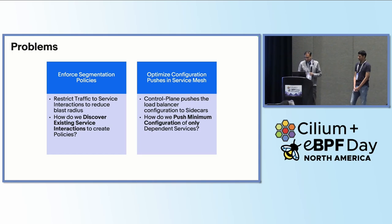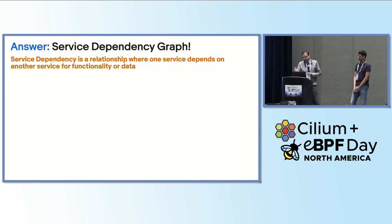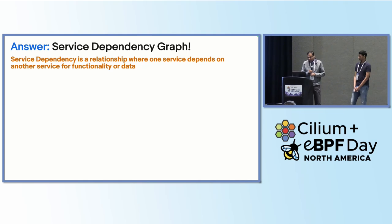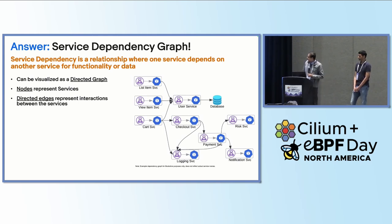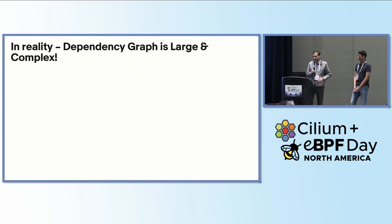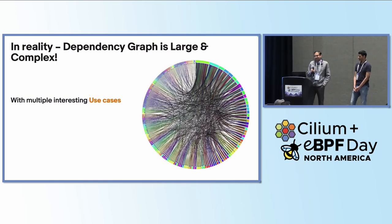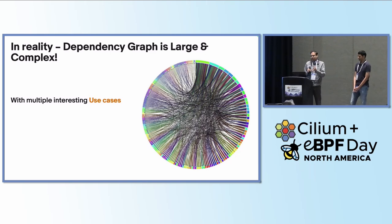These were the two problems we were looking at, and the answer turned out to be building a service dependency graph. A service dependency graph is a relationship where one service depends on another for any of its functionality or data. Formally, it can be visualized as a directed graph where nodes represent services, and there is an edge if service A calls service B. The right side shows a representative dependency graph, but in reality it's a much more complex and large graph. With 5,000 microservices, it looks something like this — very hard to visualize. But as we started collecting the dependencies, this opened up a lot of interesting use cases.